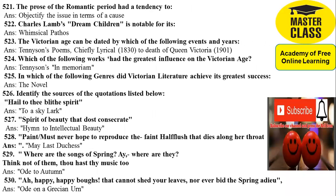521: The prose of the Romantic period had a tendency to objectify the issue in terms of cause. 522: Charles Lamb's Dream Children is notable for its whimsical pathos. 523: The Victorian age can be dated by Tennyson's Poems Chiefly Lyrical 1830 to the death of Queen Victoria in 1901.